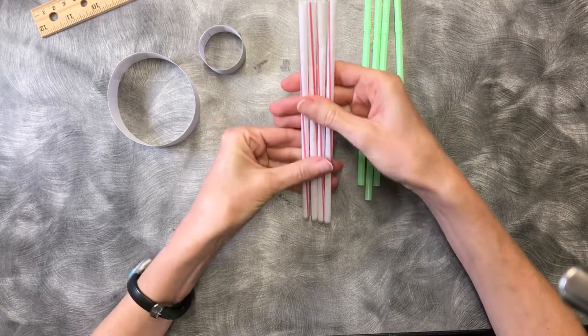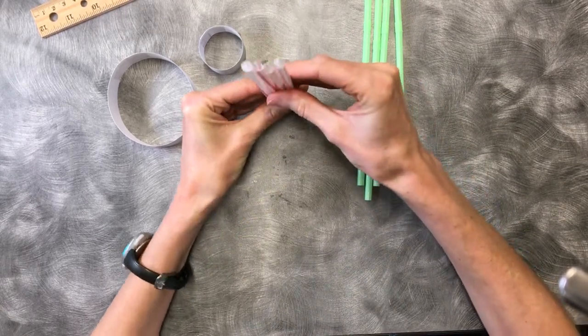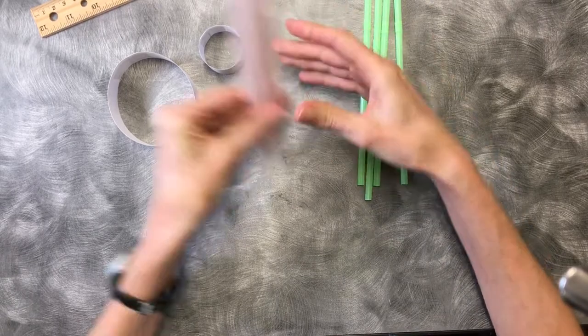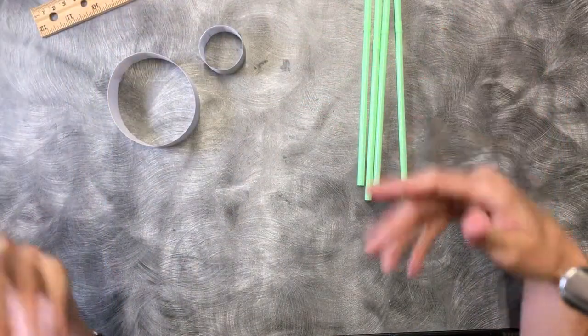The straws would be a little longer if you use the straight straw. If you want to trim them, you can, but you want them all the same length. Line them up and you can trim them. But you don't have to. That's another way you can modify it.